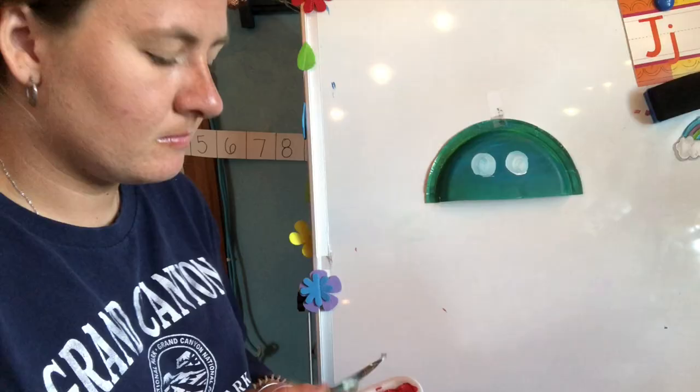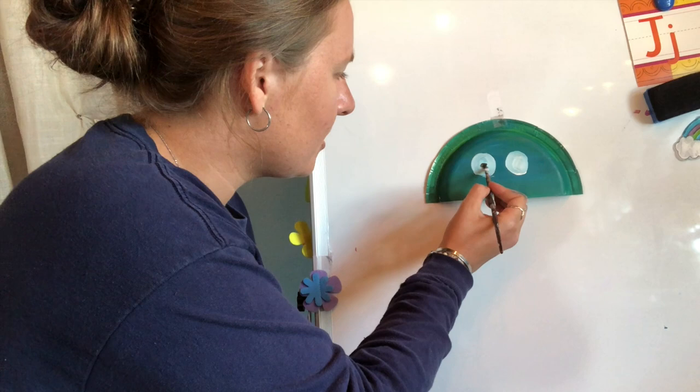Okay, now I have to add my pupils. Remember, that's the black in the middle of your eye. So I have some black on my paint brush. I'm just going to do the same kind of thing. Around close. Around close.